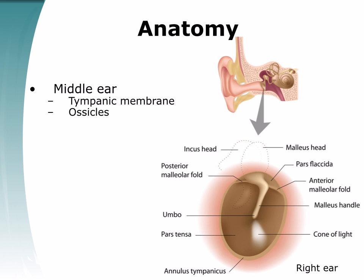The ossicles are the bones involved in sound conduction. From lateral to medial, they are the malleus, the incus, and the stapes. The handle and lateral process of the malleus is attached to the tympanic membrane and can be easily seen on physical exam. The long process of the incus can often be seen through the posterior superior quadrant of the membrane. The stapes is attached to a footplate which is in direct contact with the fluid of the inner ear.